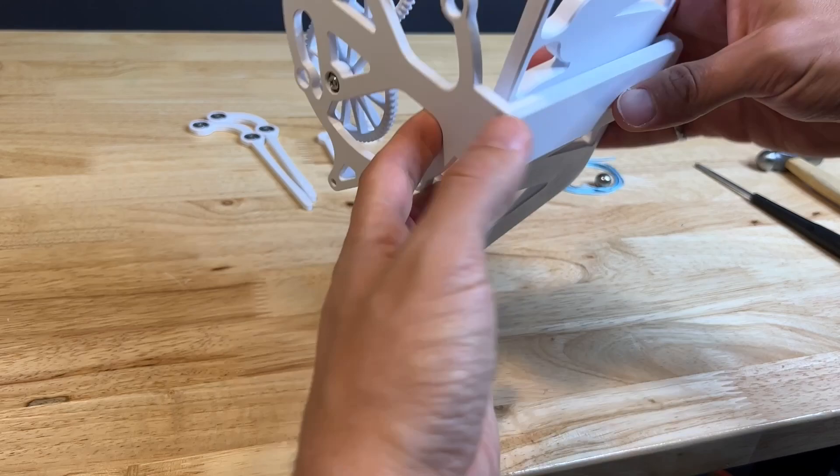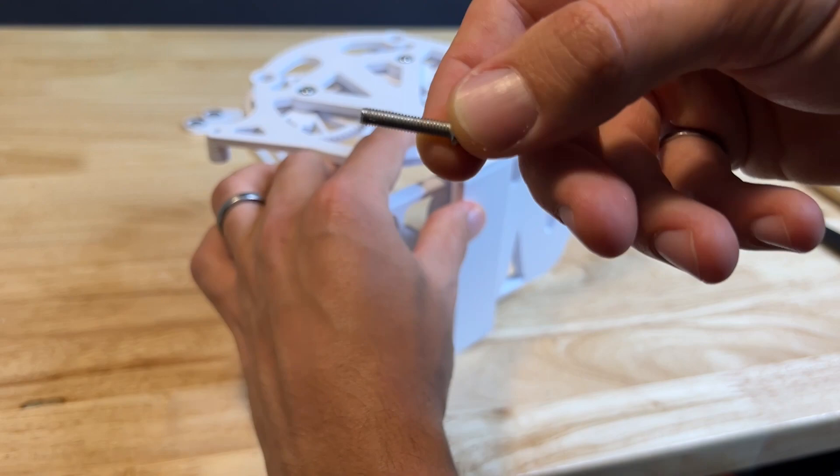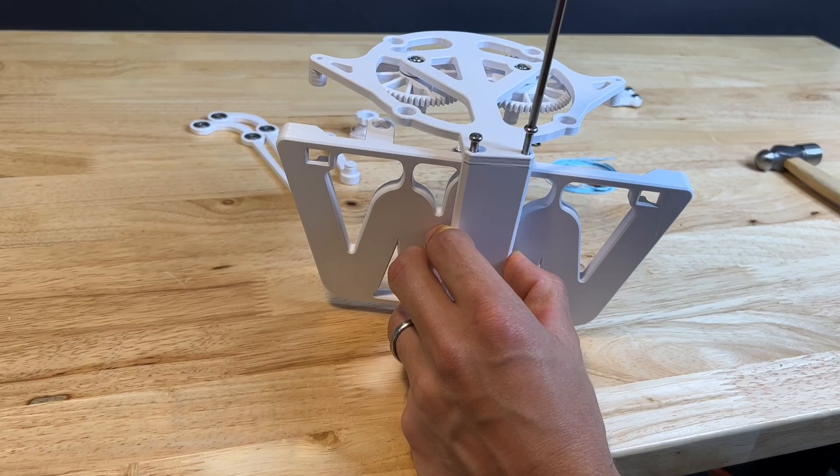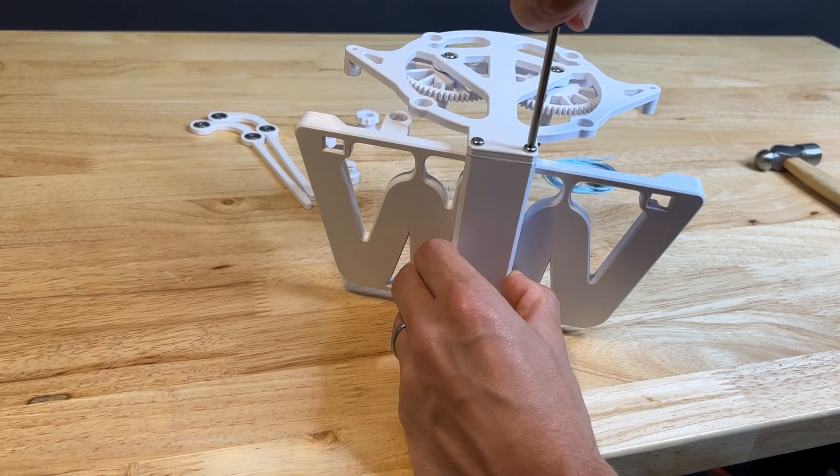Then using two M4 by 20 millimeter screws, you're going to screw into the back of the base. You'll notice that I'm screwing each screw kind of evenly, not tightening either one all at once. That's just to make sure everything is aligned.